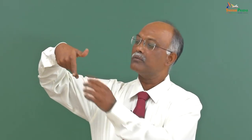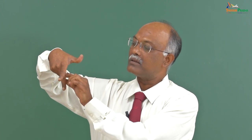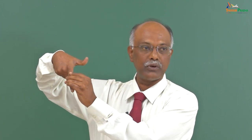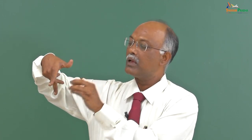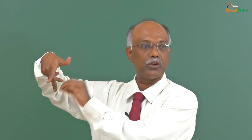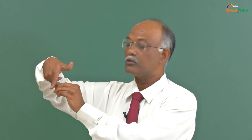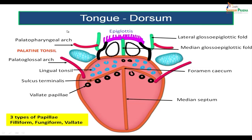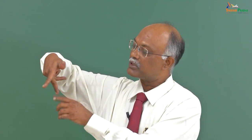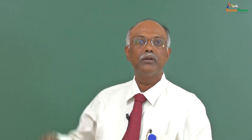The fold extending from the pharynx to the palate is called the palatopharyngeal fold, and the fold extending from the tongue to the palate is called the palatoglossal fold. So you have two folds or arches: one going from the tongue to the palate — the palatoglossal fold — and one going from the pharynx to the palate — the palatopharyngeal fold. The palatine tonsils are located in the space between the palatoglossal and the palatopharyngeal folds.